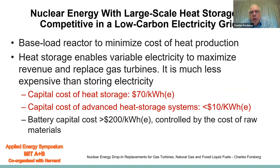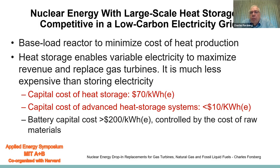Nuclear energy with large-scale heat storage is competitive in a low-carbon electric grid. First, we have a baseload reactor to minimize cost of heat production. Second, heat storage enables variable electricity to maximize revenue and replace gas turbines. Heat storage is much less expensive than storing electricity. The capital costs of existing heat storage systems are about $70 per kilowatt-hour. Advanced heat storage systems are projected to be as low as $10 per kilowatt-hour. In contrast, the long-term battery cost goals are $200 per kilowatt-hour, controlled by the cost of raw materials.